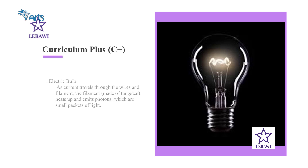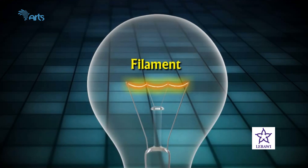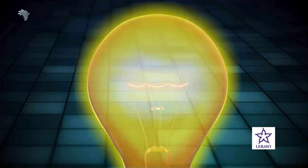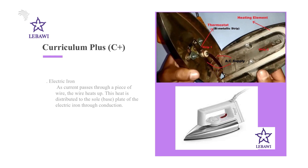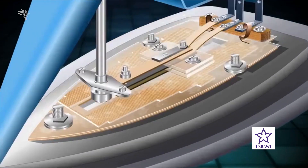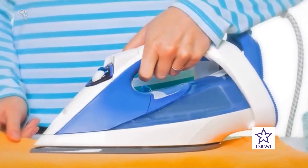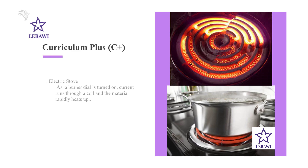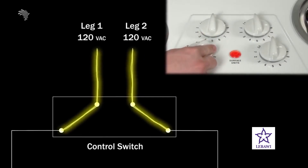Finally, let's see some practical applications of the heating effects of electric current. Electric bulb: the electric bulb consists of a fine wire or filament made of tungsten placed in a glass bulb containing inert gas. As current travels through the filament, it heats up and emits photons, which are small packets of light. Electric iron: as current passes through a piece of wire, the wire heats up, and the heat is distributed to the sole plate of the electric iron through conduction, providing the energy to press cloth. Electric stove: as a burner dial is turned on, current runs through a coil and the material rapidly heats up, providing sufficient energy for cooking.